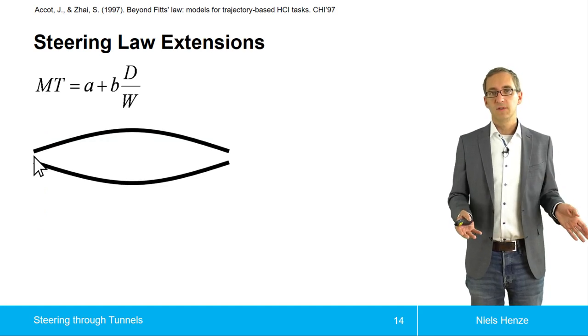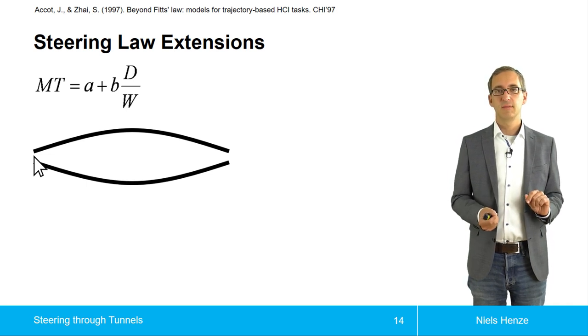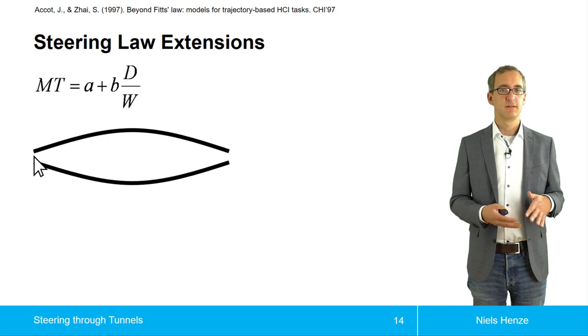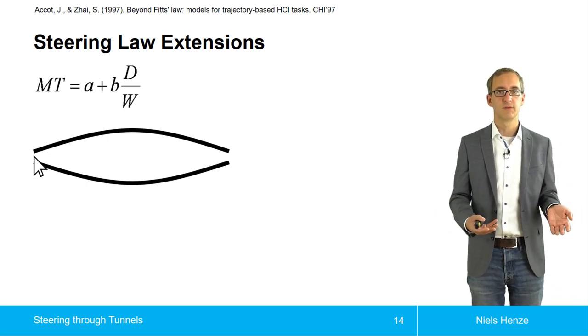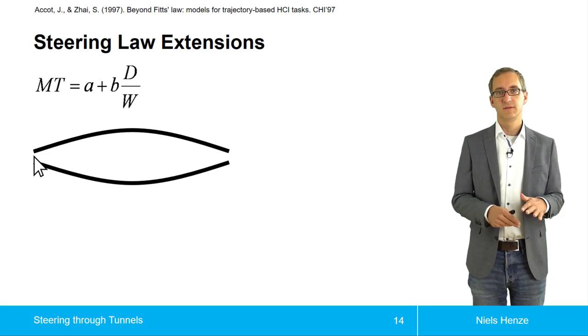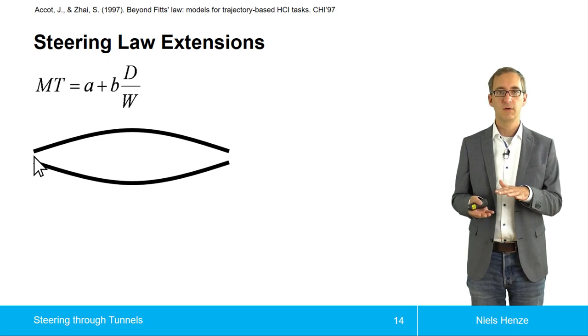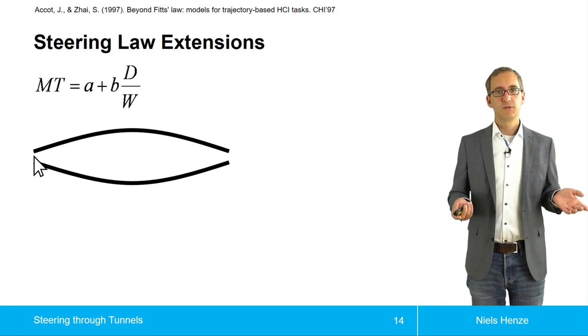So there are different types of tunnels. Steering law was originally envisioned just for regular tunnels that don't change throughout the tunnel. But there are other types of tunnels. And just one example is shown here: the tunnel first is widening, and then it gets narrow again.